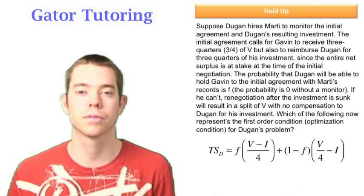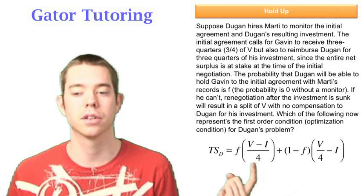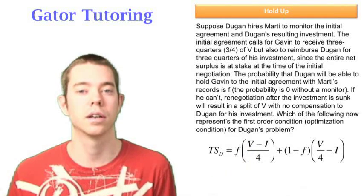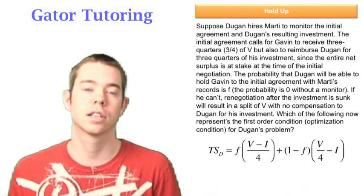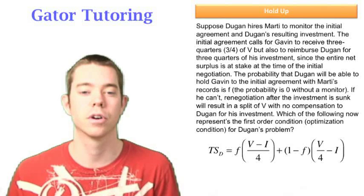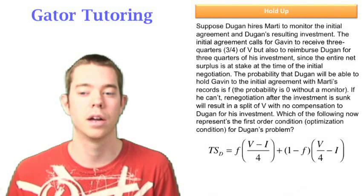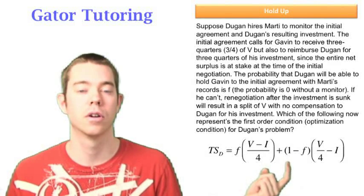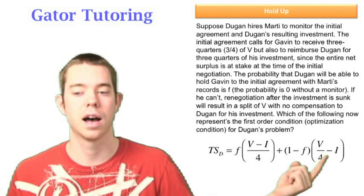So let's look at what total surplus for Dugan looks like. Well, f percent of the time, we're going to have value minus investment divided by four. The reason I've left value as a V without putting our value function in there is I looked at the answer choices and I saw the answer choices didn't have that value function anywhere in them. So I was going to leave just the V in there. One minus f is the probability that we are going to have the holdup problem. So we'll have V divided by four minus I by itself.